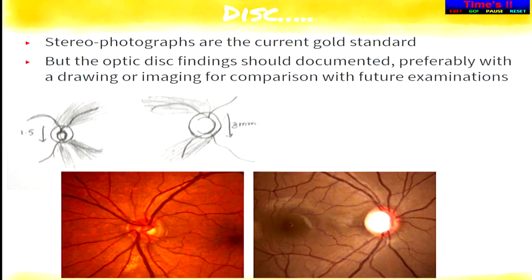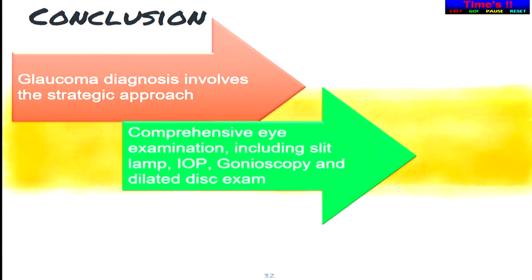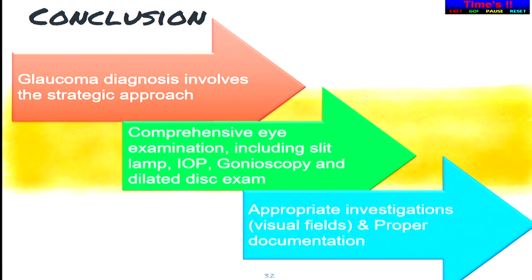For intraocular pressure, the Goldmann applanation tonometer is the gold standard — clean it properly, explain to the patient, and take proper consent. Dilated disc examination is extremely important, especially with lenses — multiply by the magnification factor and perform red-free examination, then document your findings. If you can't take a photograph, draw a diagram and write down the size of the disc and vessels. To conclude, glaucoma assessment involves a strategic approach: comprehensive eye examination including slit lamp, IOP, gonioscopy, and dilated disc examination, then correlate your findings with visual field. Thank you.